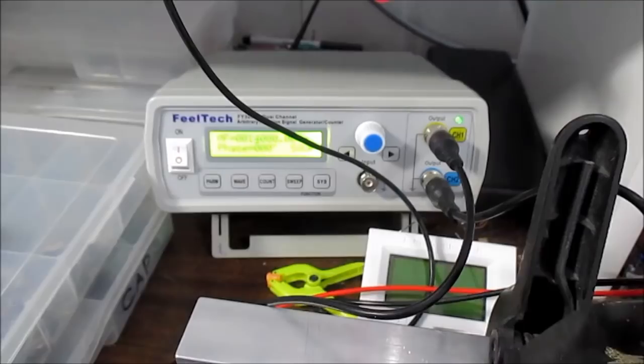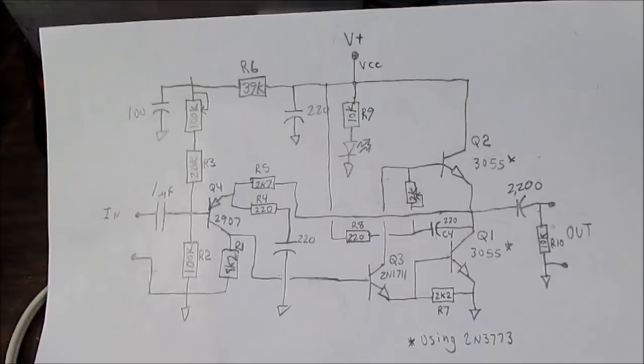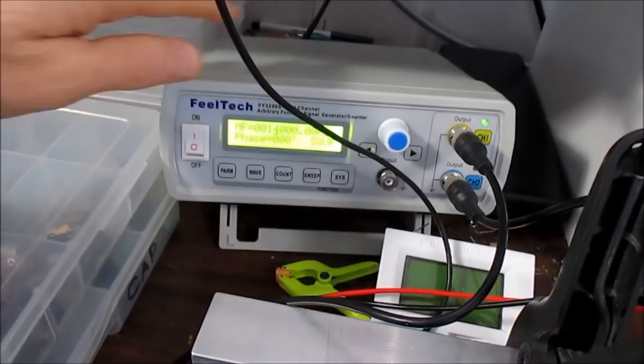So what I am doing is hooking up the FuelTech signal generator and I have the output load connected and of course the scope across that load. And I am going to use square waves.